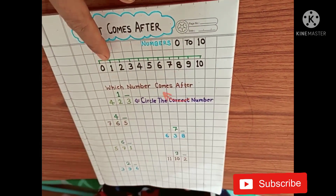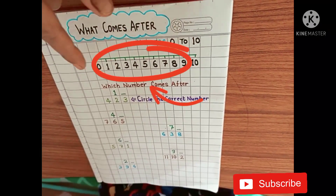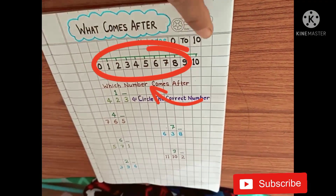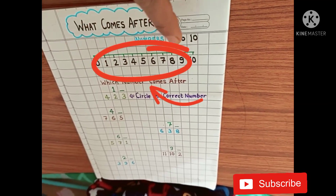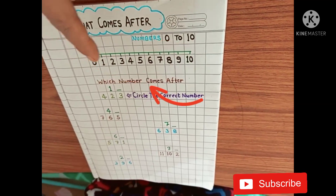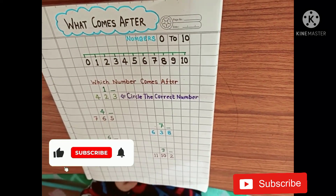Look here, Araf. This is a number line, from 0 to 10. Okay? You have to read the number first. Read it.